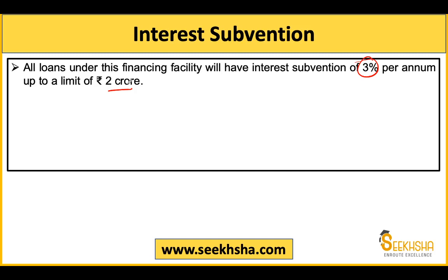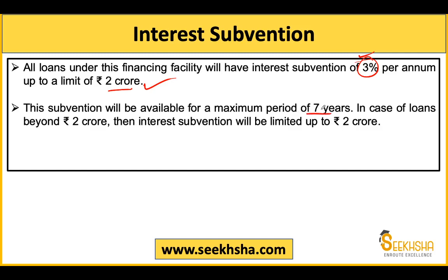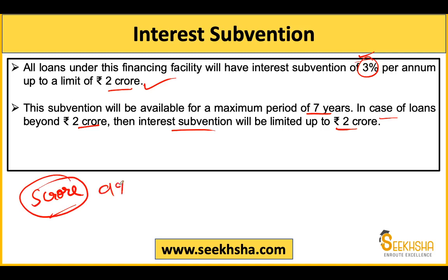All these points are very important — the examiner can ask how much interest subvention is given under the Agriculture Infrastructure Fund. This subvention is available for 7 years — the full loan repayment period. For loans above 2 crore, the interest subvention still applies but only on the first 2 crore. For example, on a 5 crore loan, the first 2 crore gets a 3% discount, so you pay 6% on that portion.